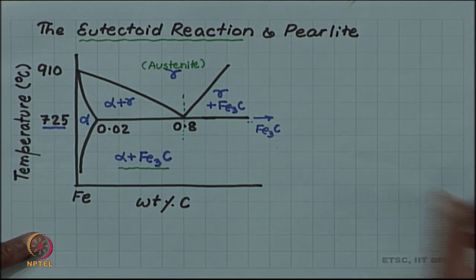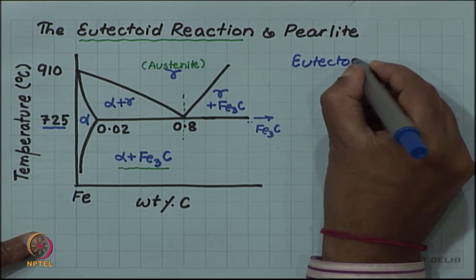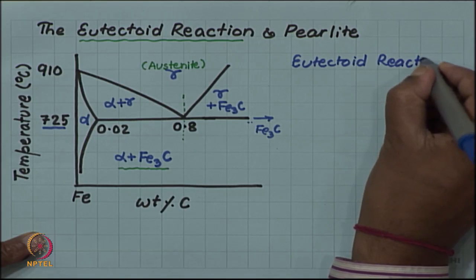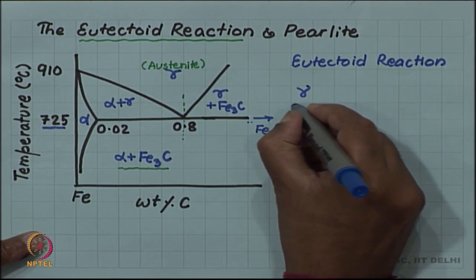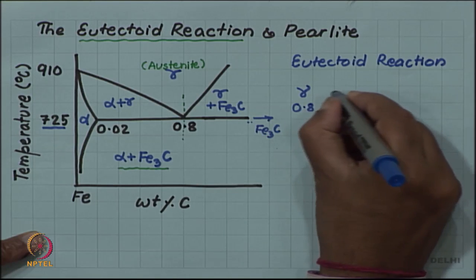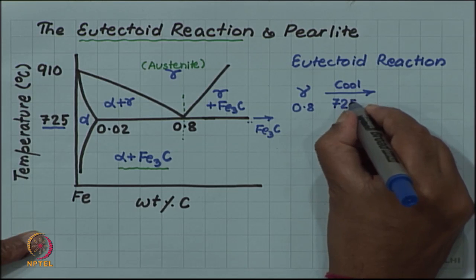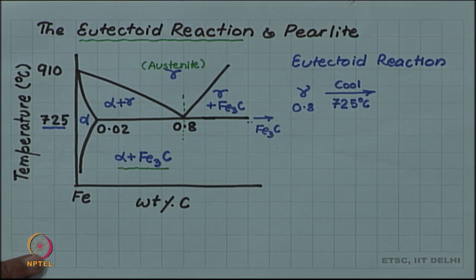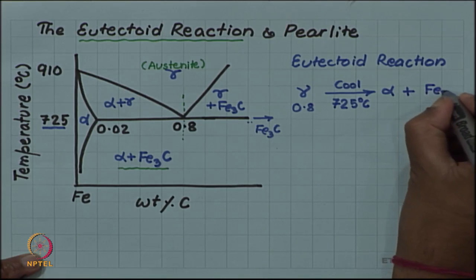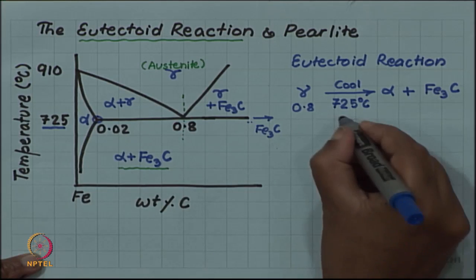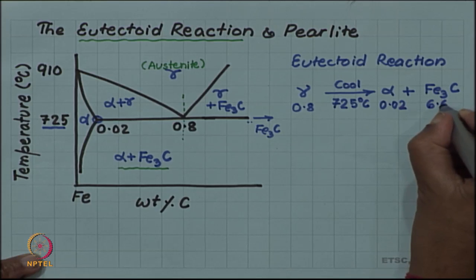Let us write down that reaction. The eutectoid reaction means gamma — that is austenite of 0.8 percent carbon — upon cooling at 725 degrees Celsius will transform into a mixture of two phases: one is alpha, the ferrite, and the other is Fe3C, the cementite. The alpha composition is 0.02 and the Fe3C composition is 6.67, all in weight percent carbon.